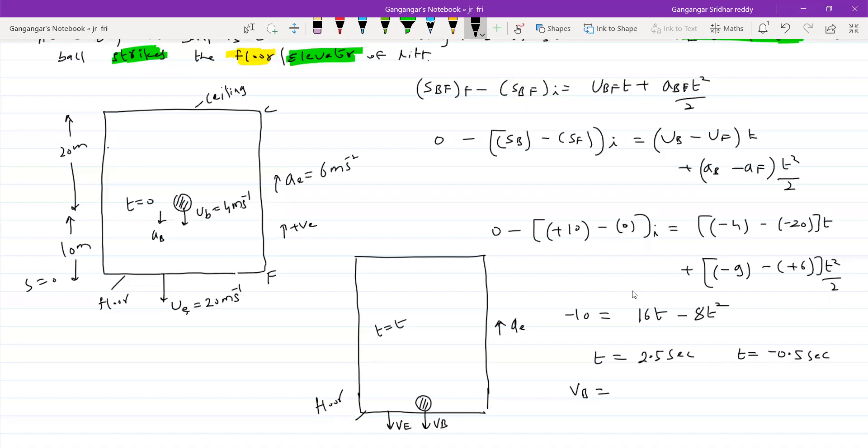So calculate the velocity of ball. So let's see that UB plus GT. So it will be positive, so it will be descending down. What about velocity of elevator? This is very important. Ue minus AT.